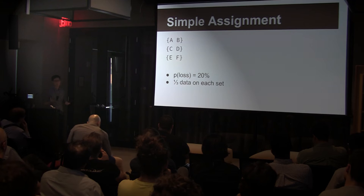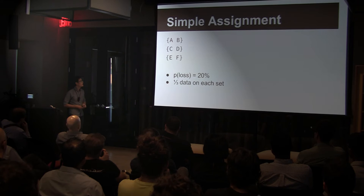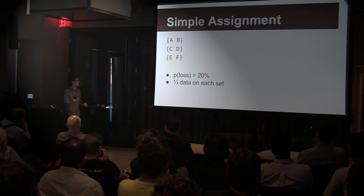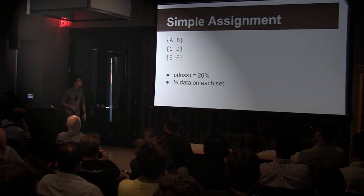Here's another example. Again six nodes, but we set them up in pairs — this looks more like Mongo. There are only three sets, so the probability that you'll lose data if two random nodes fail is three out of 15, which is 20%. If you do lose data, you will lose one third of it.